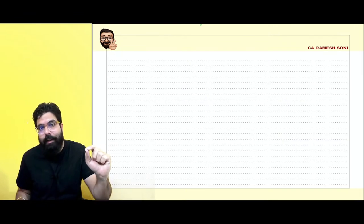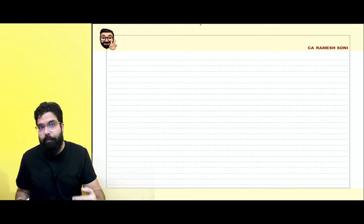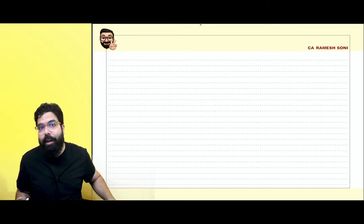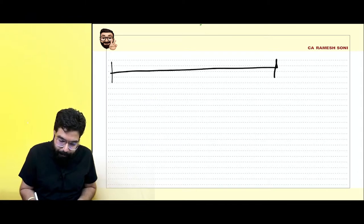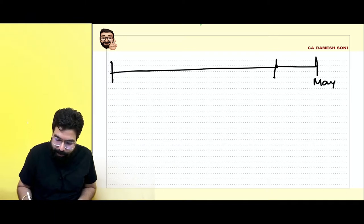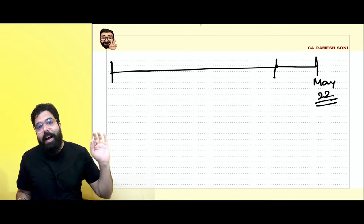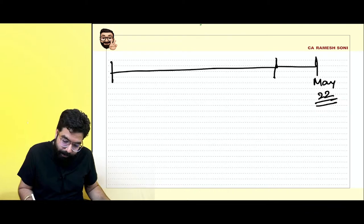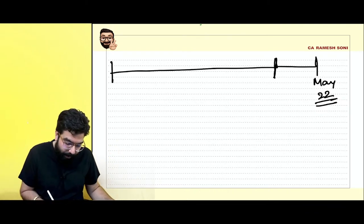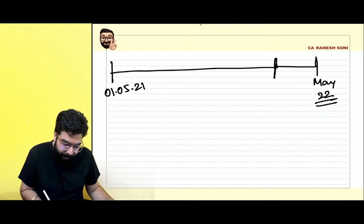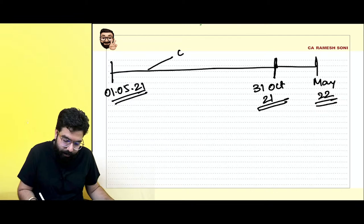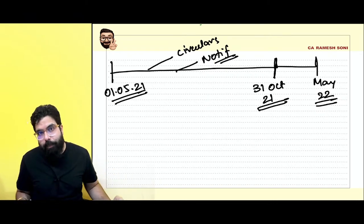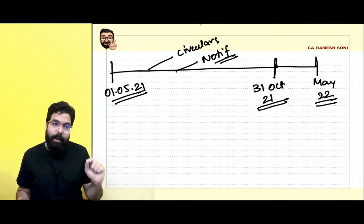If you are a student who has taken my classes for December 2021 or an earlier attempt, these amendments are for you if you are writing your exam in May 2022. For May 22 exam, six months before amendments are applicable — meaning amendments which happened between 1st May 2021 to 31st October 2021, all circulars and notifications in between these six months are applicable to you.